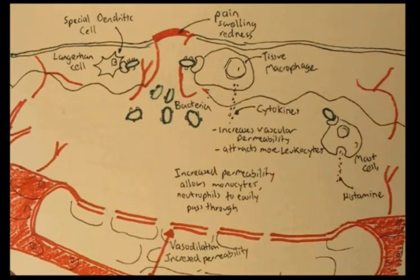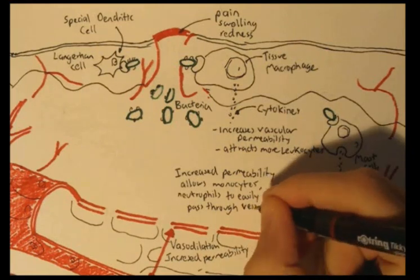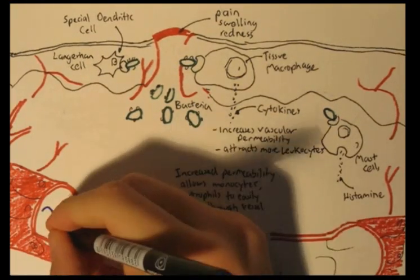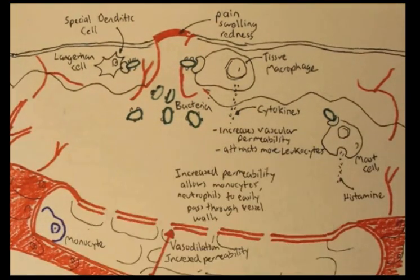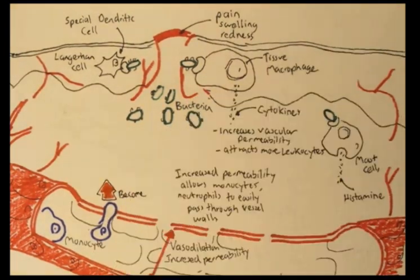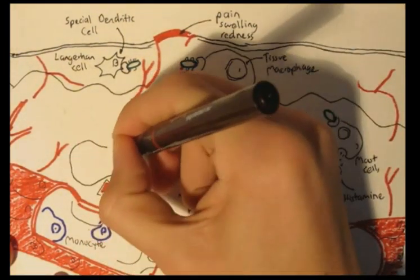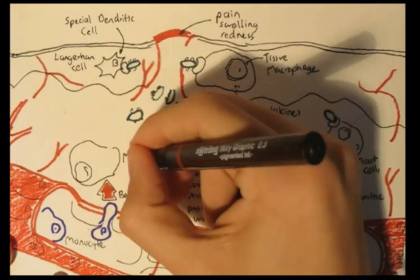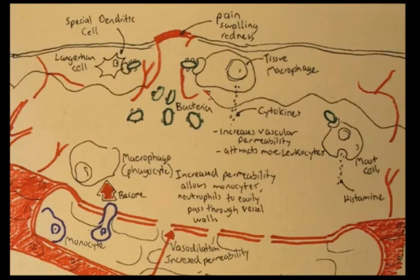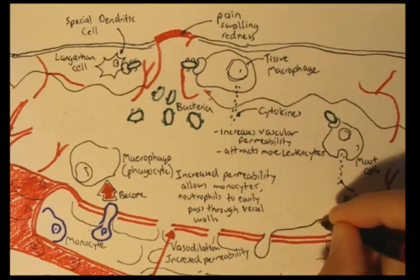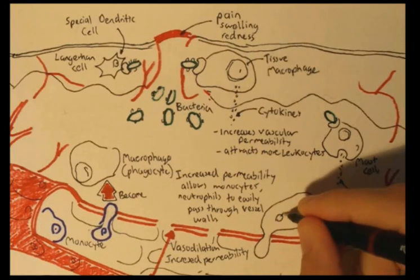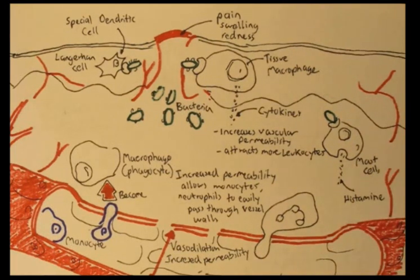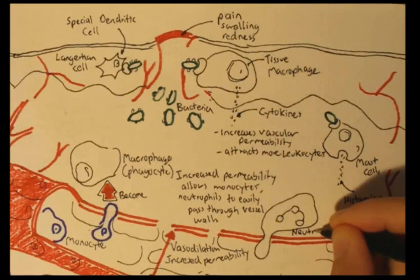The increased permeability allows immune cells such as neutrophils and monocytes to slide through the vessel walls. As monocytes slide through the vessel walls and go into the tissue, they actually become macrophages — so inside the vessels there are monocytes, but once they are out, they are macrophages. The special phagocytes called neutrophils have three lobes as their nucleus.